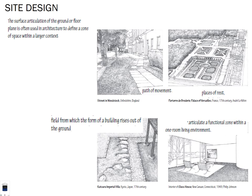In site design, the surface articulation of the ground or floor plane is used in architecture to define a zone of space within a larger context. We see paths of movement and places of rest. In urban design, we learn about paths, nodes, edges, landmarks, and districts. The floor plane articulates functional zones — even in an interior living room, the carpet placement can define areas.